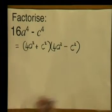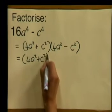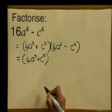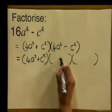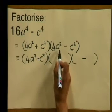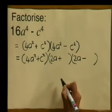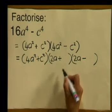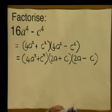Let's factorize the difference of two squares in the second bracket. We can't do anything further with the first bracket, so we just rewrite it as 4a squared plus c squared. For the difference of two squares bracket, we put down two new brackets with a plus sign and a minus sign. The square root of 4a squared is 2a, and the square root of c squared is c. So we write 2a plus c and 2a minus c. This is our expression fully factorized.